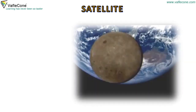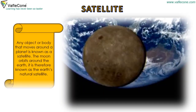Satellite. Any object or body that moves around a planet is known as a satellite. The moon orbits around the earth. It is therefore known as the earth's natural satellite.